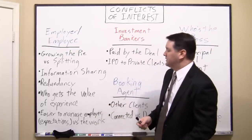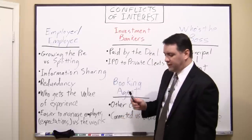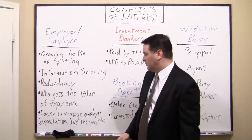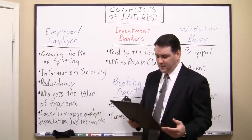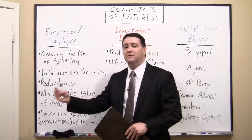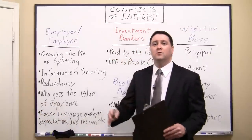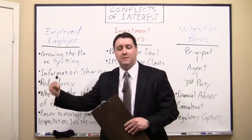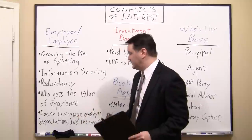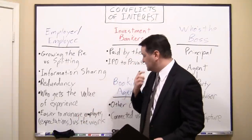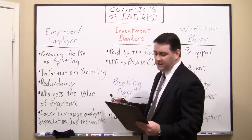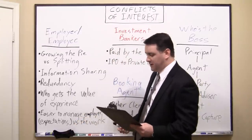The last employer-employee example is a conflict of interest when it's easier for the employee to manage up — convincing the employer that the current performance is the best they can do — than it is to actually do a better job. If doing a good job is hard but it's easier to convince your boss that's the best you can do, you'll end up playing a political game. You can do this by managing expectations, telling them the work is hard, or sandbagging — making it seem like this is the best you can do.